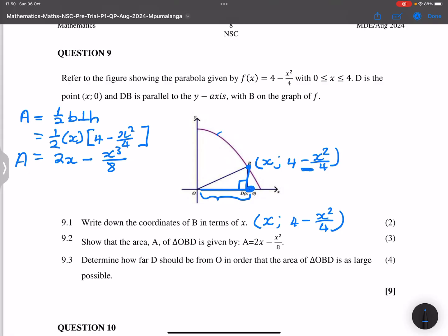So now let's go to the next question. They say determine how far D should be from O in order that the area of OBD is as large as possible. So we've got an expression for the area in terms of x. So to maximize that area, we simply take the derivative and make it equal to 0. So this would be 2 minus 3/8 x², and we know this is equal to 0.